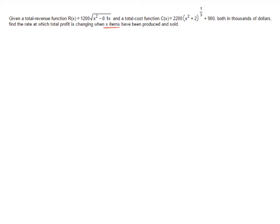So we want a formula for p prime. What does p prime of x equal? That's what they're asking us for. Well, the first thing you need to know for this problem is the relationship between profit, revenue, and cost. And the relationship is that profit equals revenue minus cost. Or in other words, p of x is equal to r of x minus c of x.